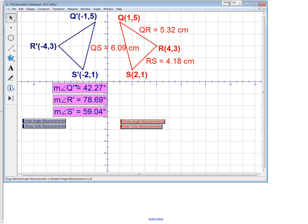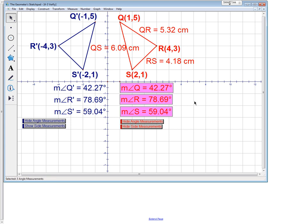Now if I look at the angle measurements the new QRS is at 42.7°, 78.69° and 59.04°. If we compare that to the original you will see that the angle measurements are exactly the same.